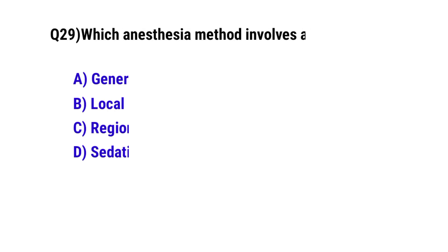Question number 29. Which anesthesia method involves a nerve block? The correct option is C. Regional.